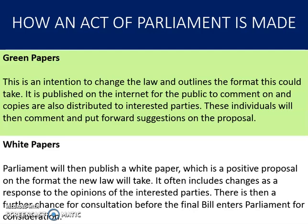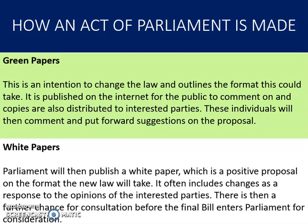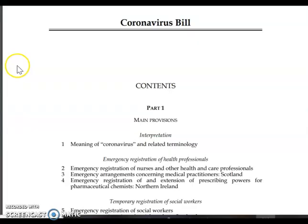Once we've gone through the green paper and white paper stage, we then have what's called a bill. A bill is a proposal for a new law, or a proposal to change an existing law, that is presented for debate before parliament. Bills are introduced in either the House of Commons or House of Lords for examination, discussion, and amendment. When both houses have agreed on the content of the bill, it is then presented to the reigning monarch for approval, which is known as the royal assent. Once the royal assent is given, a bill becomes an act of parliament and is law.